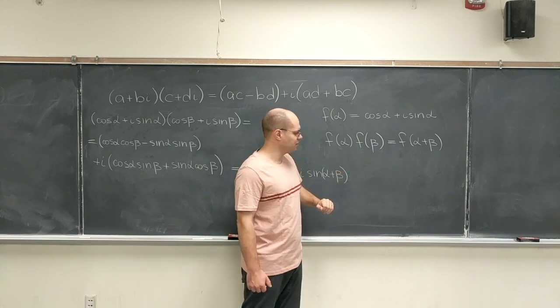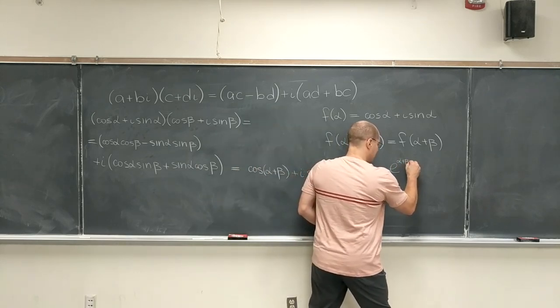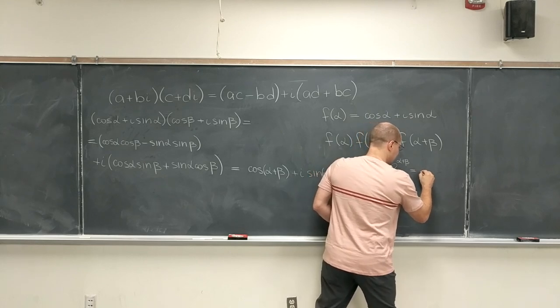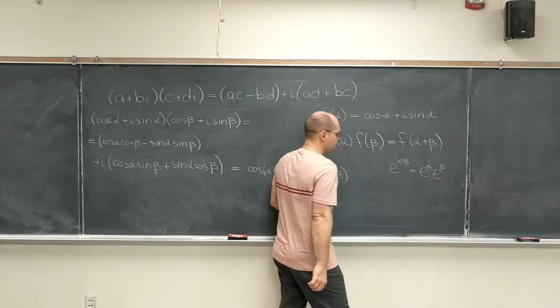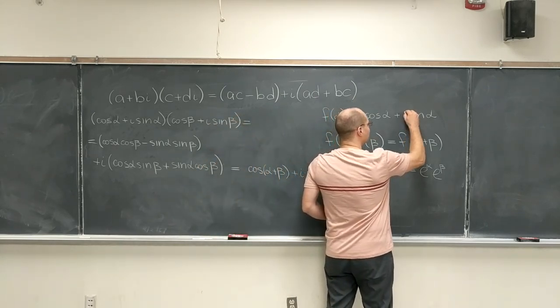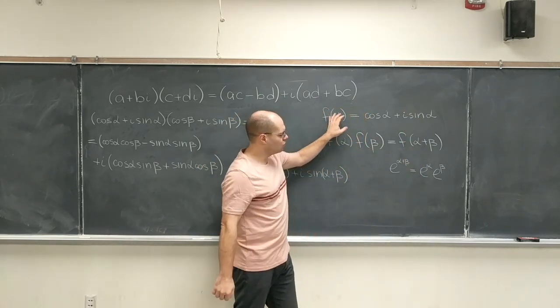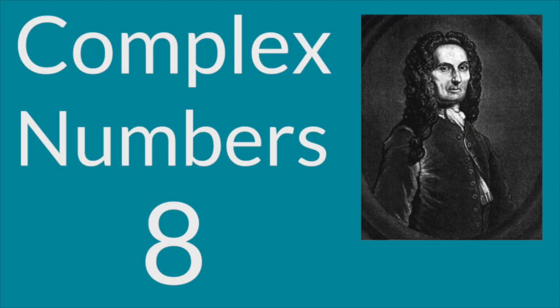For example, e to the power of alpha plus beta is the property of exponents. It's e to the alpha times e to the beta. So, this makes this function, which in no way looks like an exponential, work algebraically exactly as an exponential.